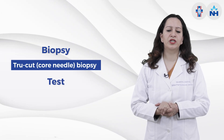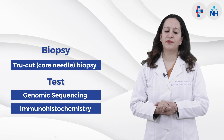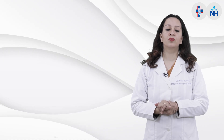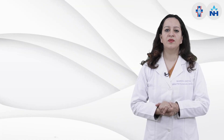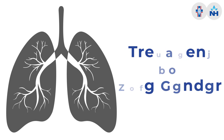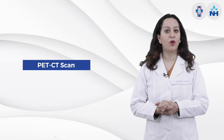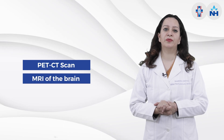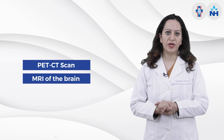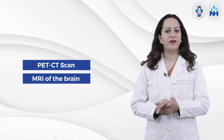In some cases, fine needle aspiration does not give all the information needed, so a core biopsy or true-cut biopsy is done where more cells are extracted. These can be subjected to further tests like genomic sequencing and immunohistochemistry, which help define the treatment plan. After radiology and biopsy, the next step is staging, since it is the stage of the disease that dictates treatment. A PET-CT scan and MRI of the brain may be conducted, as sometimes there is hidden disease in the brain.